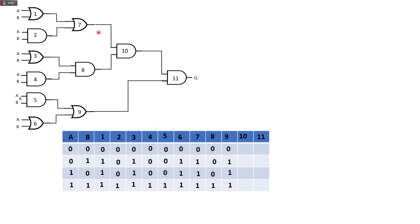Gate 10 is based on gates 7 and 8, and it is an AND gate. So: 0 and 0 is 0, 1 and 0 is 0, 1 and 0 is 0, and 1 and 1 is 1. Gate 11 is based on gates 9 and 10, and it is also an AND gate. So: 0 and 0 is 0, 1 and 0 is 0, 1 and 0 is 0, and 1 and 1 is 0. This will be our final answer.